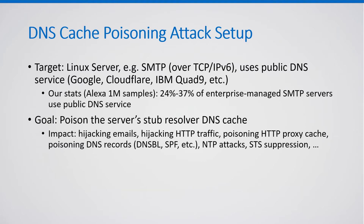The attack's goal is to poison the server's stub resolver DNS cache. The impact is extensive: hijacking emails (this is an SMTP server after all), hijacking HTTP traffic, poisoning HTTP proxy cache, and poisoning DNS records used for anti-spam and anti-malware services like DNS blacklisting, sender policy framework, and so forth. NTP relies on DNS so the target's clock can be manipulated, and ironically, strict transport security bootstraps using DNS so it can be suppressed.